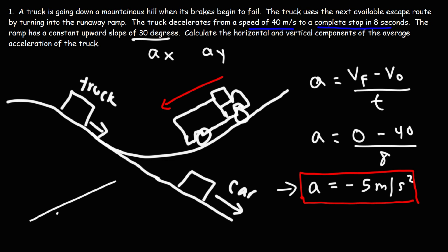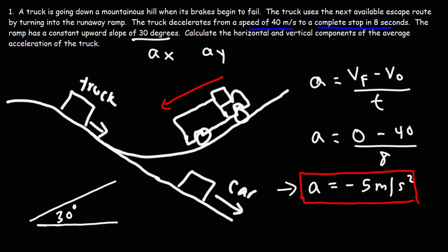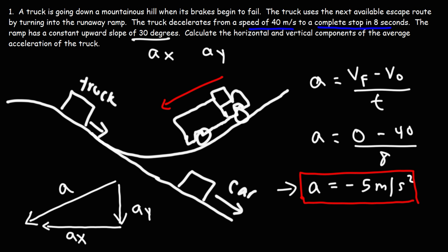We have a slope of 30 degrees relative to the horizontal, and I've drawn a triangle here. In this triangle, the acceleration vector points in the southwest direction — down the hill. That's vector a. Vector a has an x component directed to the left and a y component directed downward. Here is our vector a, here is the x component, and here is the y component.